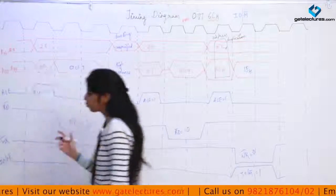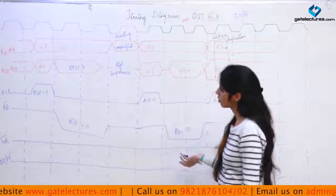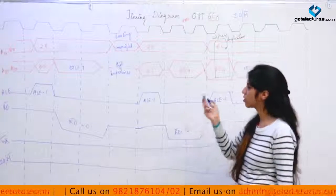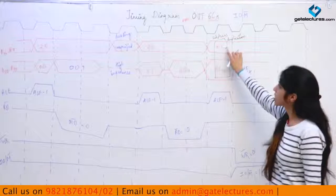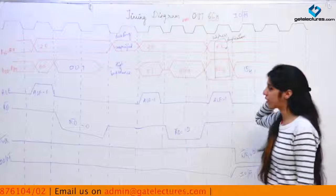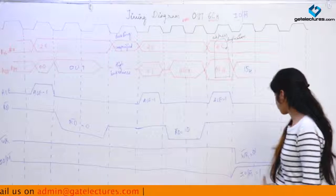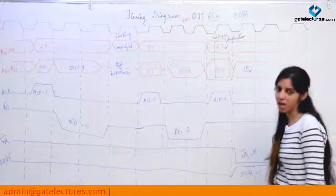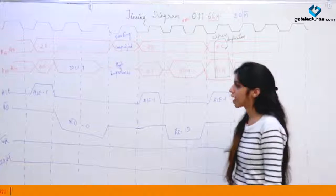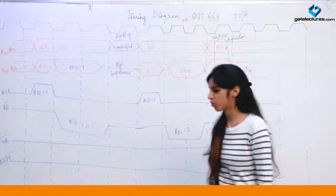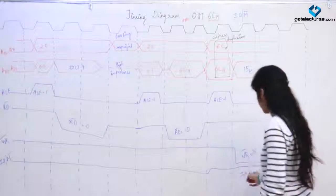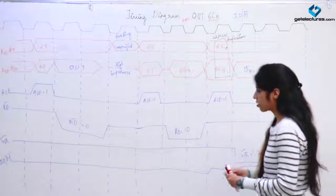We are going to make IO/M̄ as 1 here. So there are only two things that are different from other instructions: one is that address duplication takes place in input/output read/write, and the other is that you have to make the IO/M̄ pin 1 to write or read something from the I/O device.